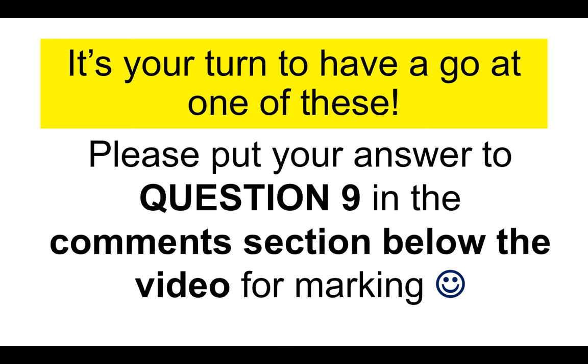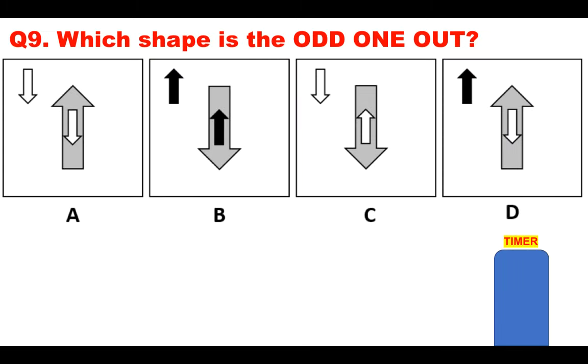Now it's your turn. Please put your answer to question nine in the comments section below the video for marking. Which shape is the odd one out? Is it A, B, C or D?